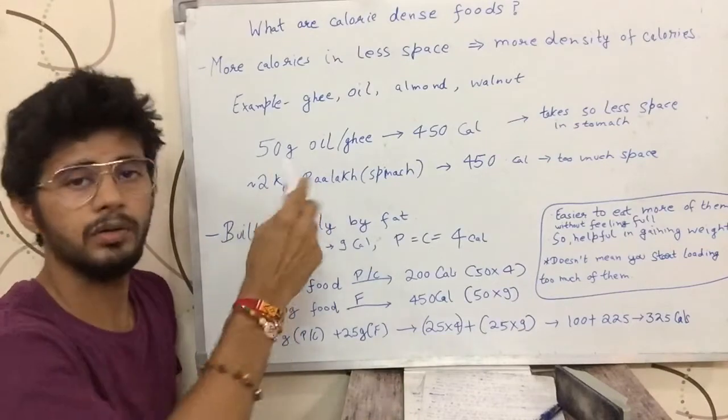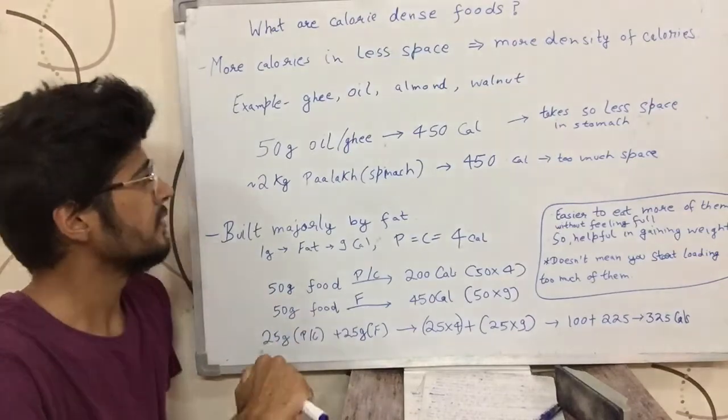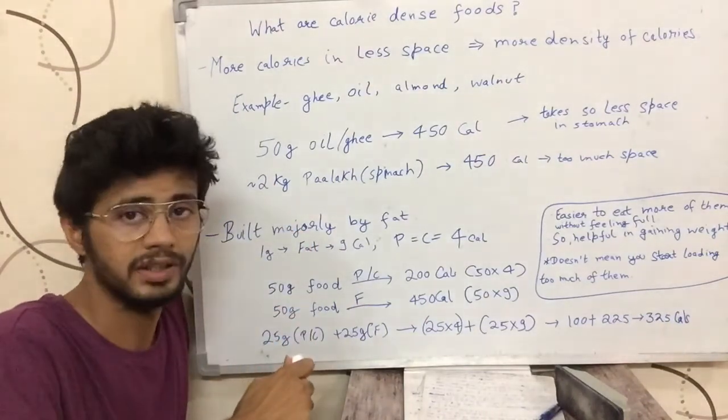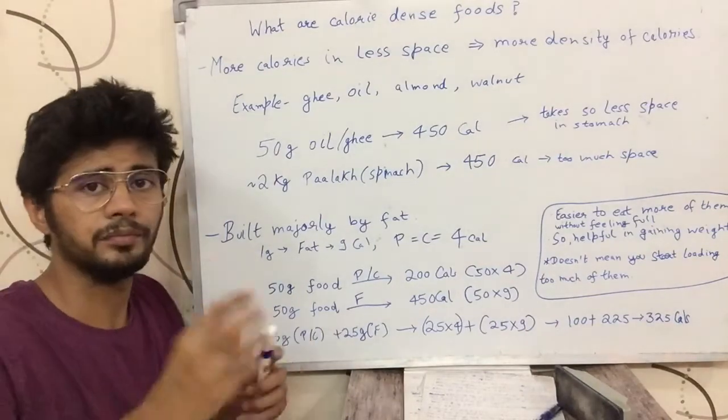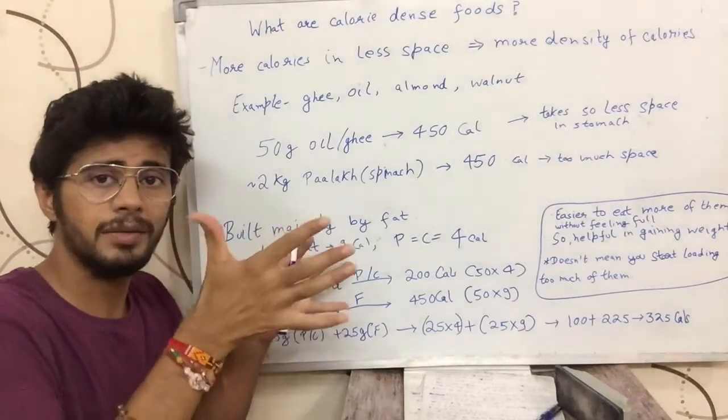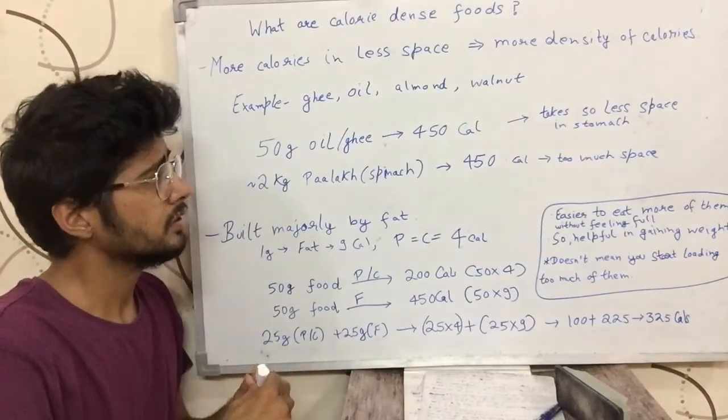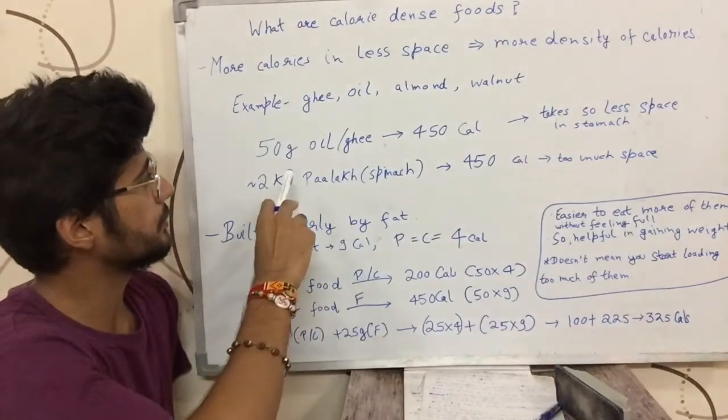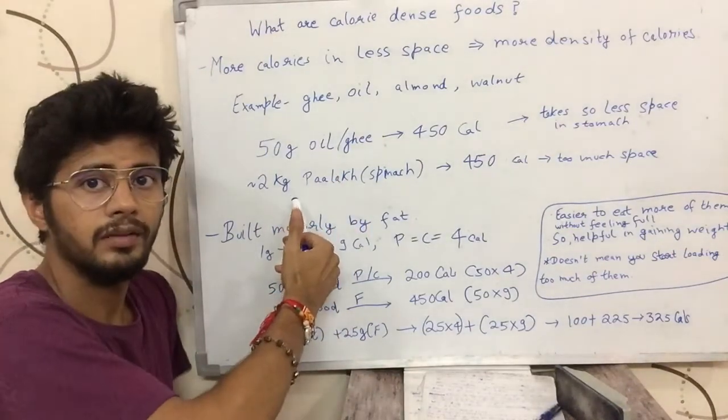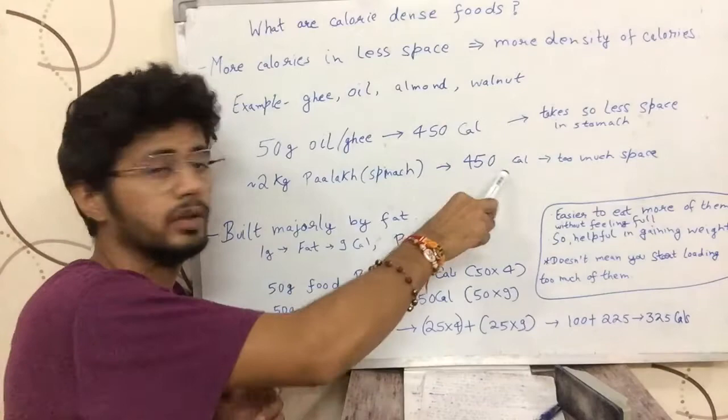If I have to eat 450 calories from oil, I would just drink 50 grams of oil or take in 50 grams of oil with my food. If I want to take same amount of calories with spinach, I would have to eat 2 kilograms of spinach, which is not an easy thing to do. Because 50 grams of oil would take very small space in my stomach, while 2 kilograms of spinach would take a lot of space, it would perhaps not be even possible to eat 2 kilograms of spinach in a day. Basically, I get the same amount of calories in lesser space when I eat oil, while when I eat spinach, I have to take a lot of space in my stomach to get those calories.